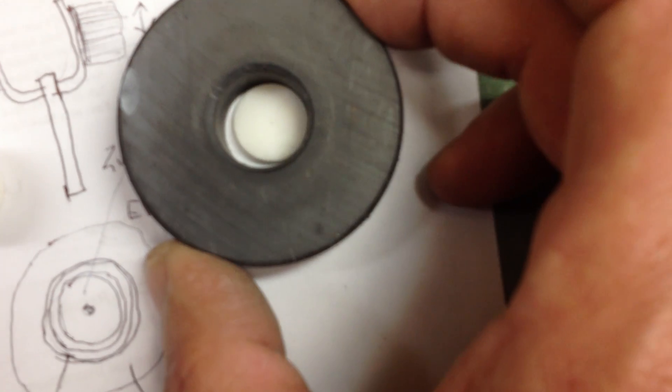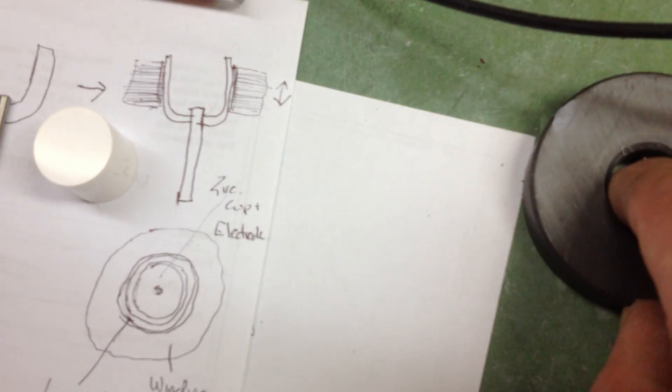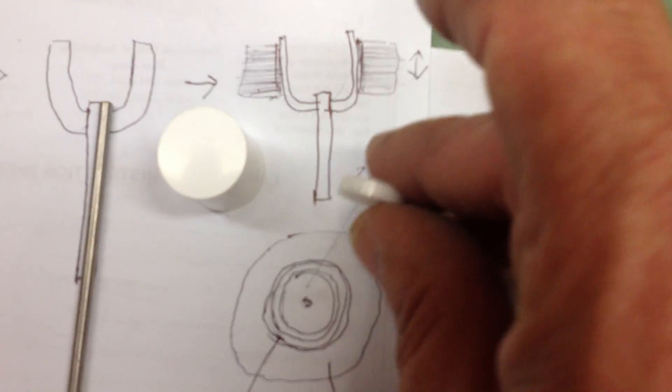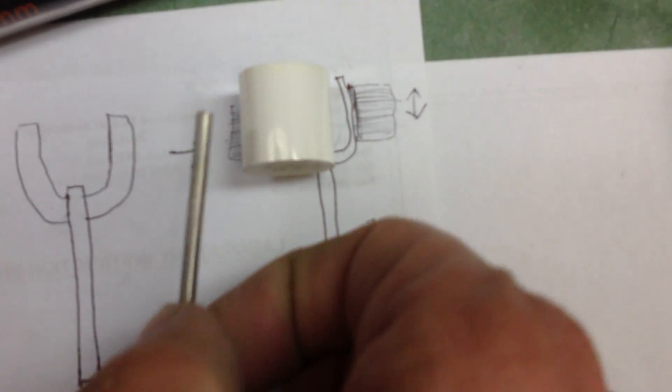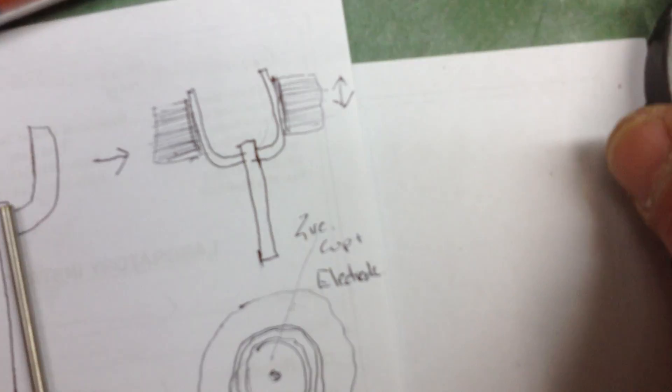I might even make an electromagnet. It depends on how much strength is needed to do this. But anyway, around the cup with the electrode inside the cup, you've got your magnetic field around it.